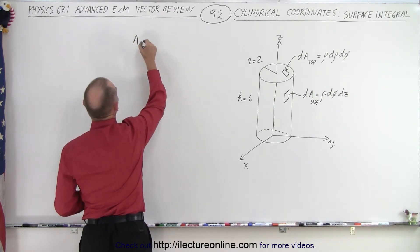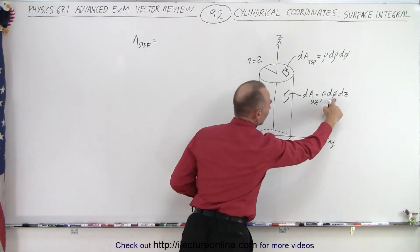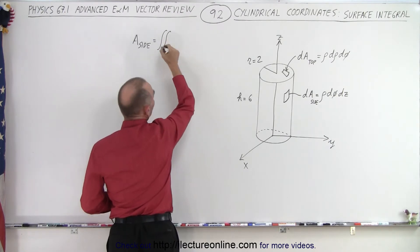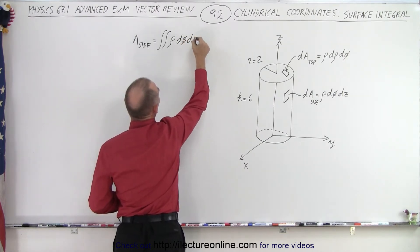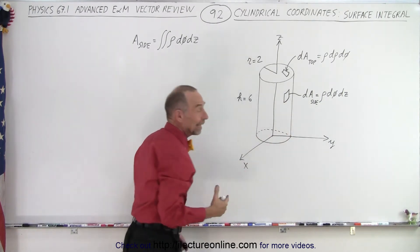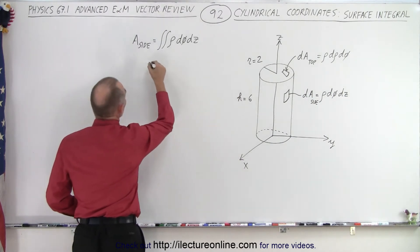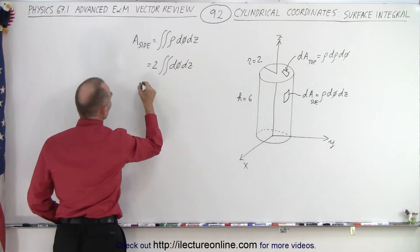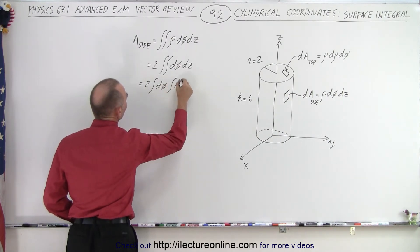The area for the side is equal to a double integral. We have two variables — we integrate over phi and over z. That's going to be the double integral of rho times d-phi times dz. Now rho is the radius of the cylinder, and the radius of the cylinder is constant, so it can come outside. Rho is equal to 2, so this can be written as 2 times the double integral of d-phi times dz.